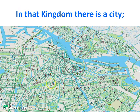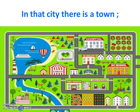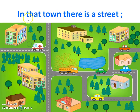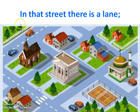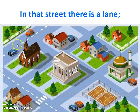In that kingdom, there is a city. In that city, there is a town. Town is the bigger concept and street is the smaller concept. So in that town, there is a street. In that street, there is a lane.